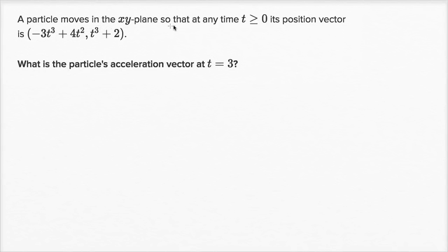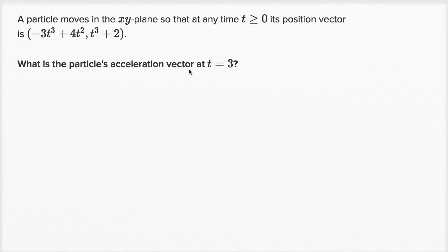A particle moves in the xy plane so that at any time t greater than or equal to zero, its position vector is given with an x component and a y component, both functions of time. What is the particle's acceleration vector at time t equals three?